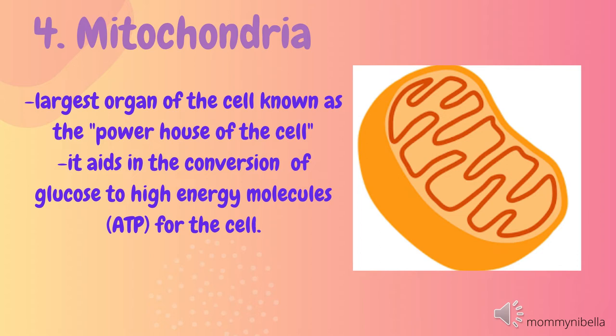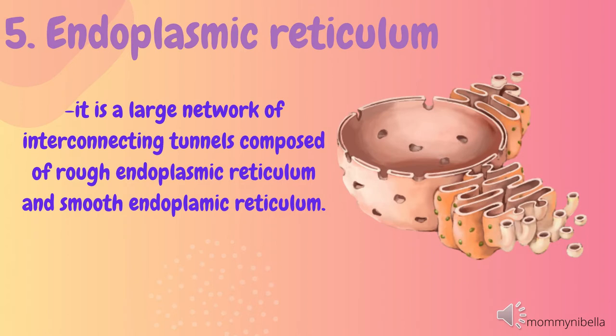Mitochondria aids the conversion of glucose to high-energy molecules ATP for the cell. Number five: endoplasmic reticulum. It is a large network of interconnecting tunnels composed of rough endoplasmic reticulum and smooth endoplasmic reticulum.